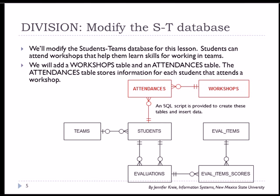To work through an example of this using the student teams database, we need to add tables to our database. Here's the data model. We will add workshops that shows the types of workshops available, and then we will add attendances, which records when students attend a particular workshop. There is a script available at the URL shown at the beginning of the video that you can download to run this.